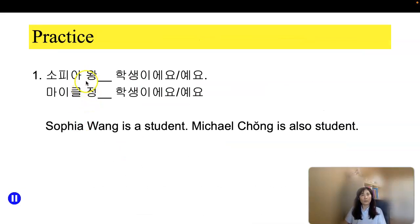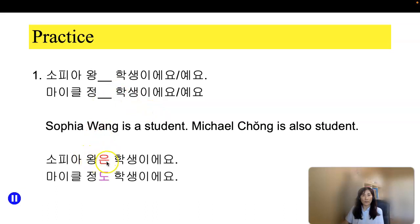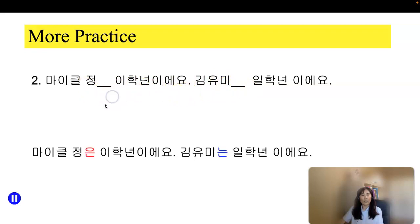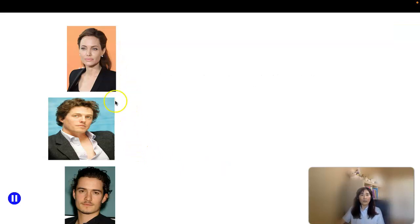Let me provide more examples. Sophia Wang은 학생이에요 — Sophia Wang is a student. The next person Michael Jung is also a student. By adding particle 도, 마이클 정도 학생이에요. Now, Michael Jung은 2학년이에요. 김유미는 1학년이에요. They are different in terms of school year. As a beginning statement you start with 은/는: 마이클 정은 2학년이에요. But 김유미 is different, so: 김유미는 1학년이에요.